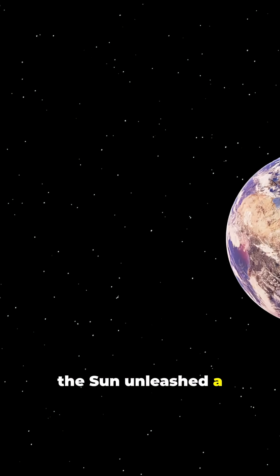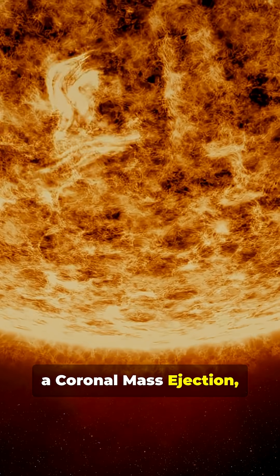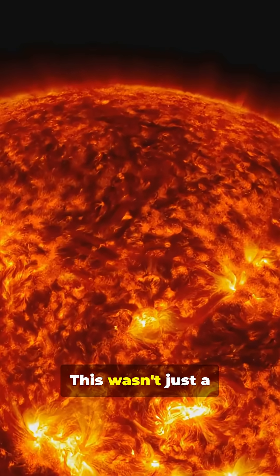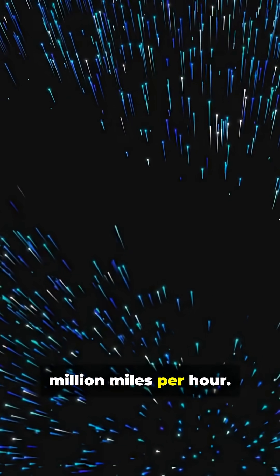On that day, the sun unleashed a colossal cloud of magnetized plasma, a coronal mass ejection, or CME. This wasn't just a flash of light. It was a physical storm of solar particles, rocketing through space at over 6 million miles per hour.